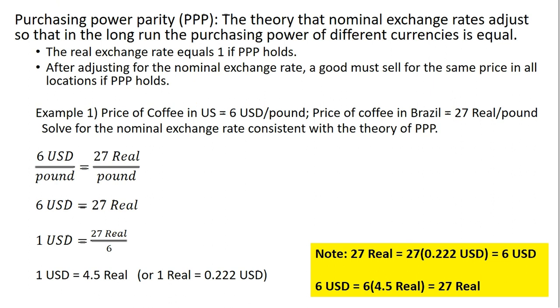So let's do an example. The price of one pound of coffee in the U.S. is six U.S. dollars per pound. The price of coffee in Brazil is 27 real per pound.